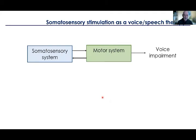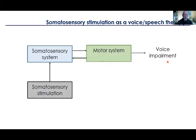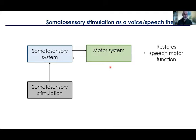We understand there is a somatosensory system that provides information about the state of the body to the brain, and the brain has a motor system that tries to speak and vocalize — turning on a certain set of laryngeal muscles to make this work. In SD, people have a voice impairment, so something is wrong there. Our thinking was: what happens if we stimulate the somatosensory system, which will then modulate activity in the somatosensory cortex, which should then modulate activity in the motor system and motor cortex — and will this restore speech motor function in people with SD?